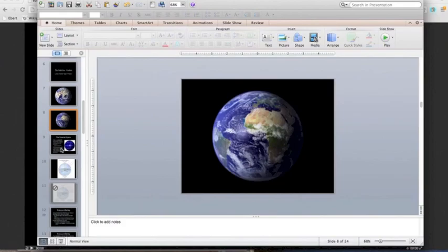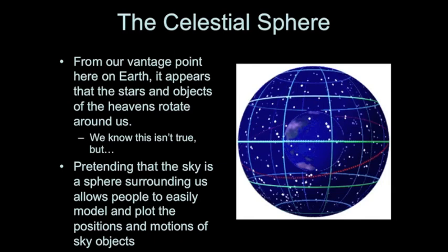But because you're standing on the Earth and moving with it as it rotates, you don't actually feel it move. And so as the Earth rotates, the things that are in the sky appear to move around you.